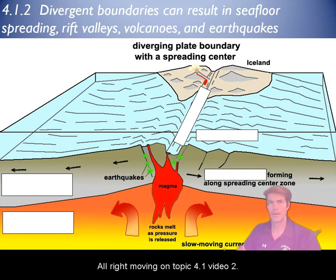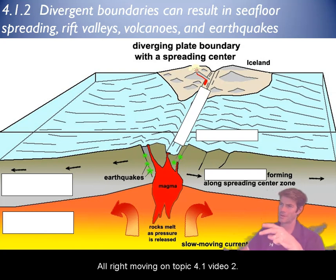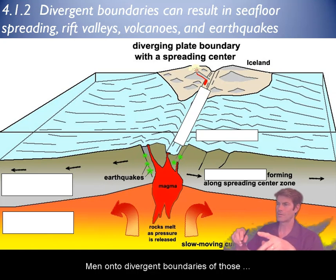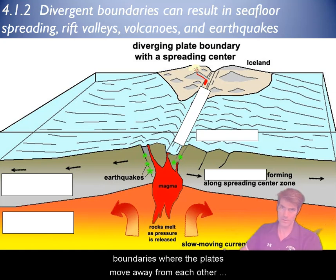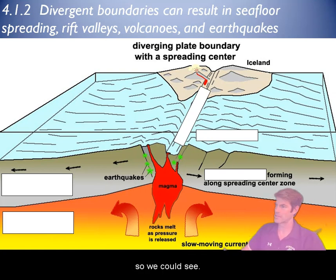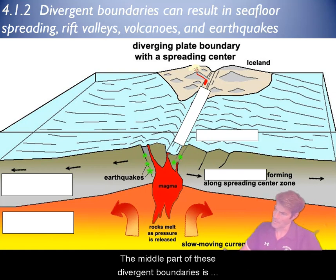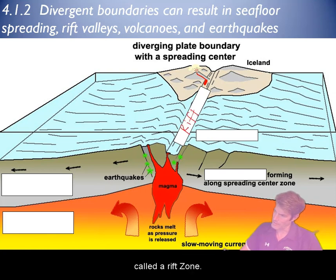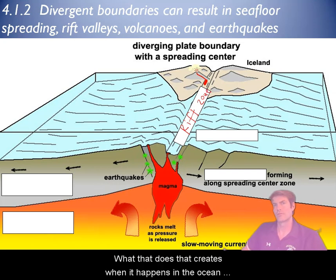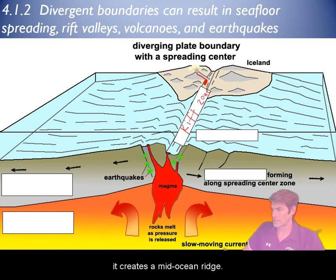Moving on to topic 4.1, video 2. Moving on to divergent boundaries. These are those boundaries where the plates move away from each other. The middle part of these divergent boundaries is called a rift zone. When it happens in the ocean, it creates a mid-ocean ridge.